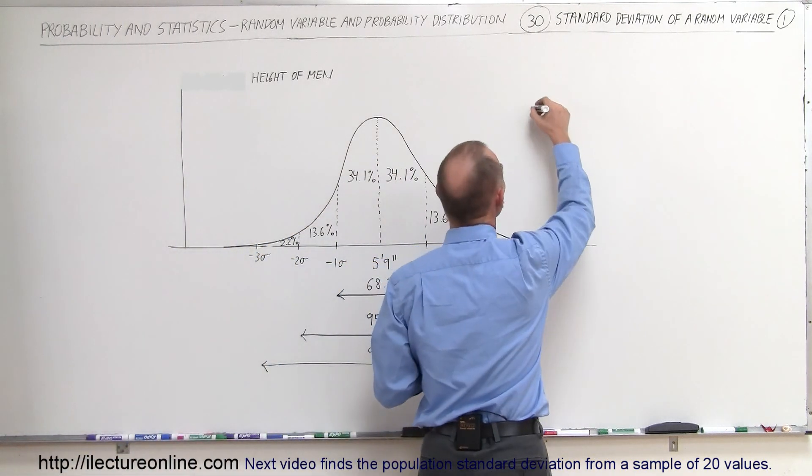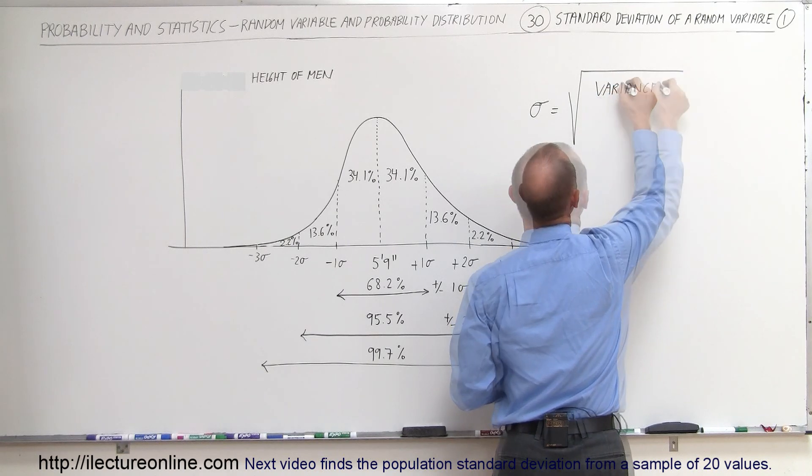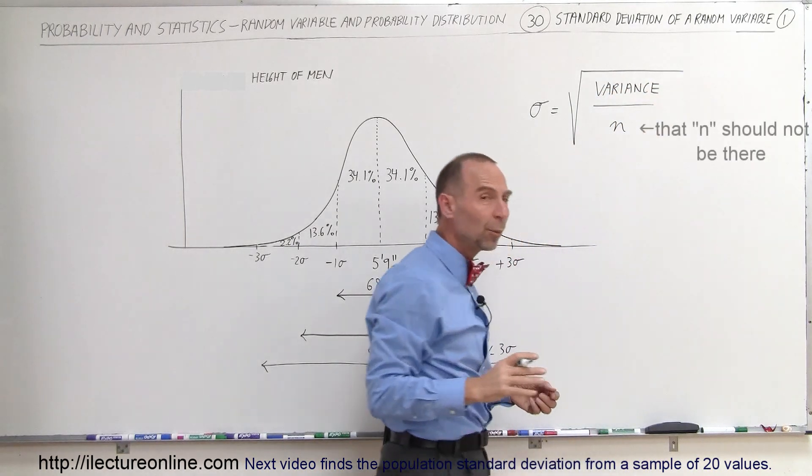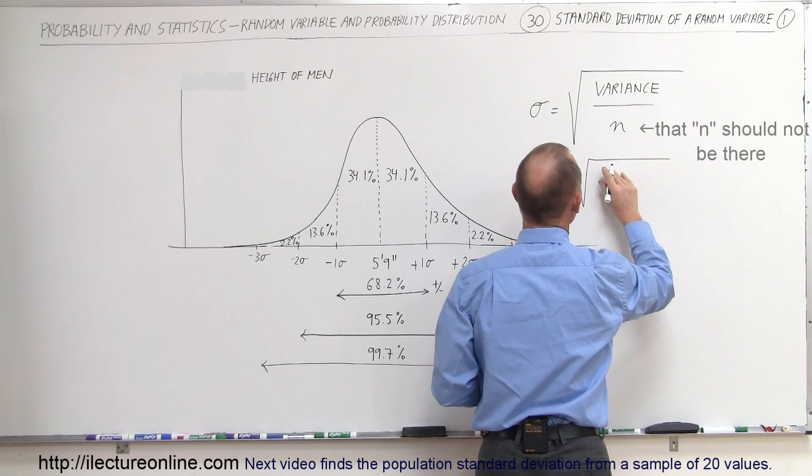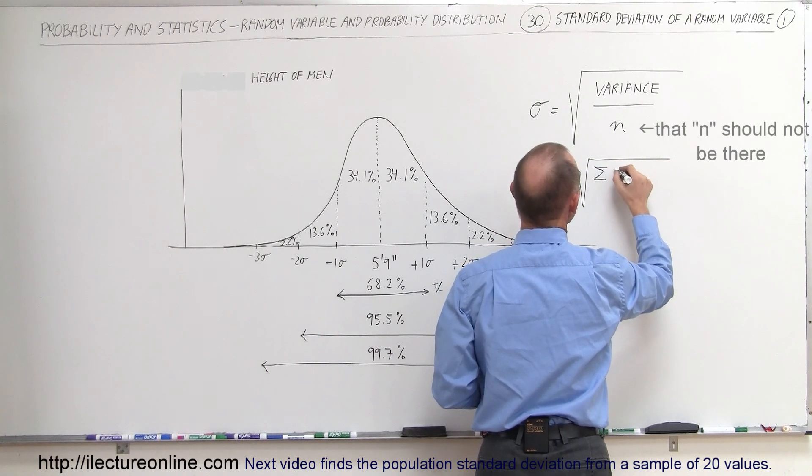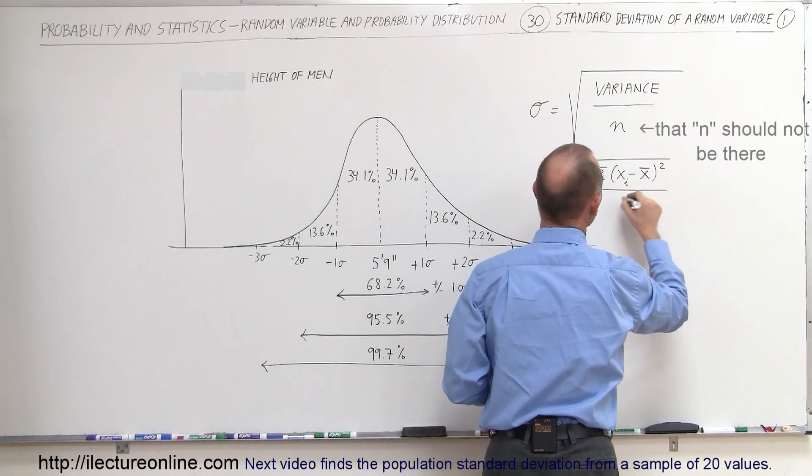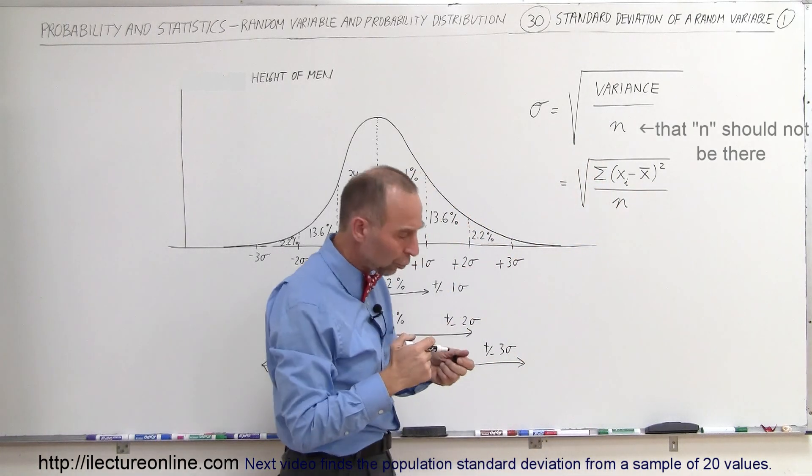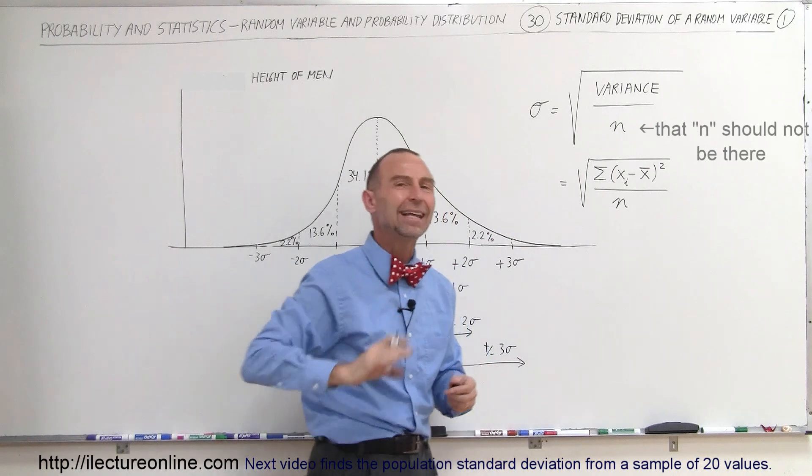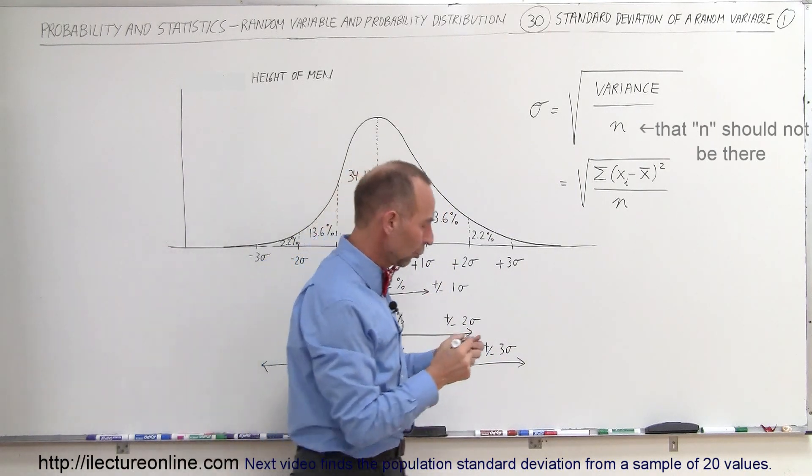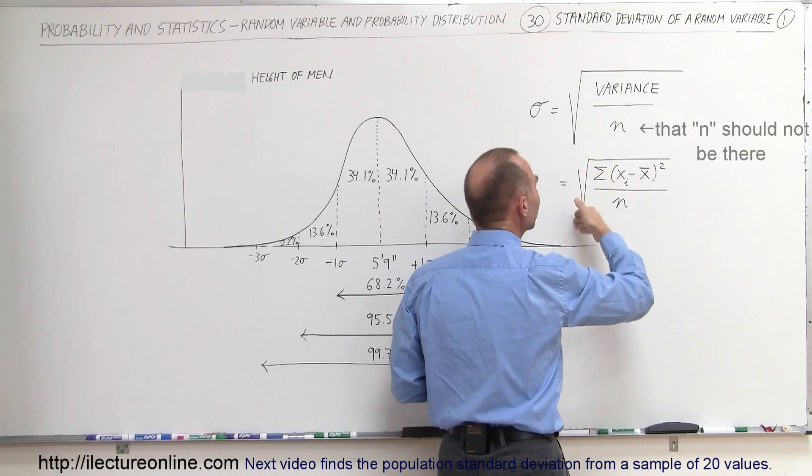The way that works is the standard deviation, sigma, is equal to the square root of the variance divided by n. And if you remember what the variance was, if you have numbers of equal probability, then we can write this as equal to the square root of the variance, which would be the sum of all the numbers. That would be the number minus the average number, quantity squared. And then we take that whole thing and divide by n. Now in some cases, we also divide it by n minus 1. So sometimes we write n minus 1, sometimes we write n. At this point, that's not yet important.